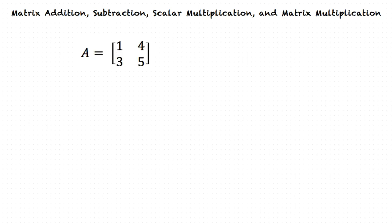We will begin by looking at Matrix Addition. For Matrix Addition, we must have two matrices with the same dimensions. The two matrices we will use are: Matrix A, Row 1: 1, 4; Row 2: 3, 5. Matrix B, Row 1: 7, 3; Row 2: 4, 8.